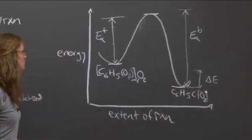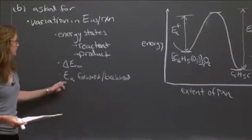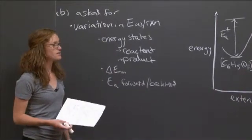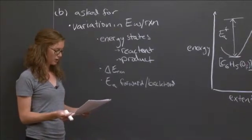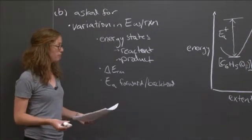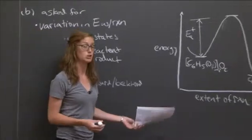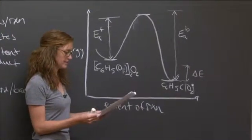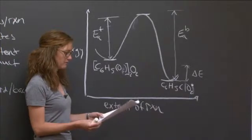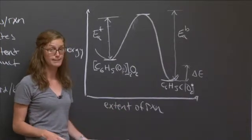So going back to our checklist here, we've answered all of the questions, and so we can move to Part C. So Part C asks us, on the same plot above, which we have over here to the right, sketch the variation in energy with extent of reaction for the decomposition of benzoyl peroxide under the influence of a catalyst.